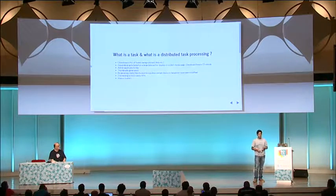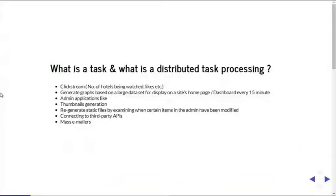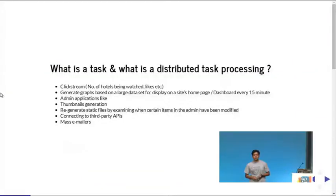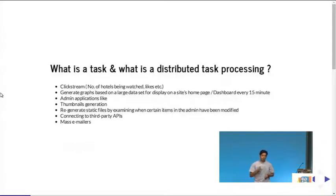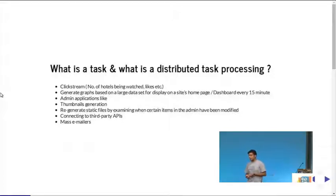So what is a task and what do you mean by distributed task processing? For me, a task is a subset of a job. Let's say a job is to send email to 1 million users — that's a complete job. How I break that job into smaller tasks: I fetch the list of 1 million users, apply a filter for what email goes to which customer, and then use my SMTP server to send those emails. I've picked up a job and divided it into smaller, smaller tasks.